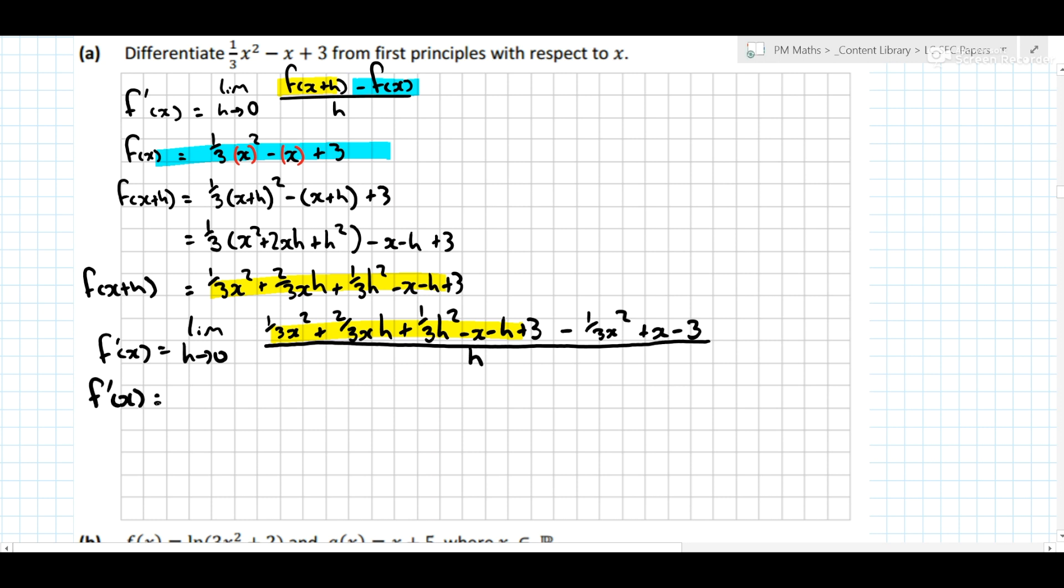So when can you divide, or when can you set h is equal to zero? Well, the easiest answer is just to say when there is no h on the bottom line, that's when you can divide, or that's when you can set h is equal to zero. So before we go and do that, there should be some factorising or cancelling that should happen.